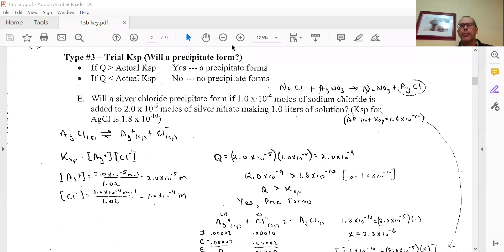We are going to look at a Type 3 problem. I have called this in the past a trial Ksp problem. Probably a better name for it would be a Q problem, because we're going to be finding a Q value, a Qsp instead of Ksp. We're trying to figure out if a precipitate will form when we're given amounts of substances. Let's take a look at an example.